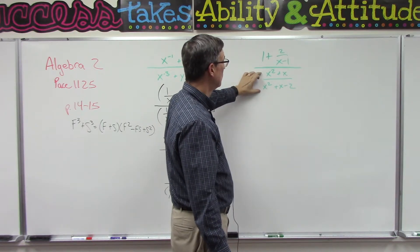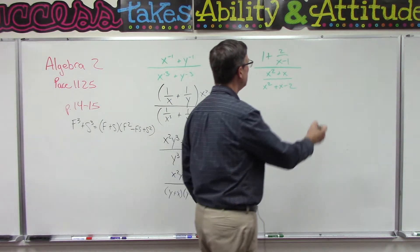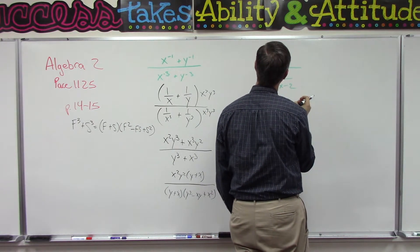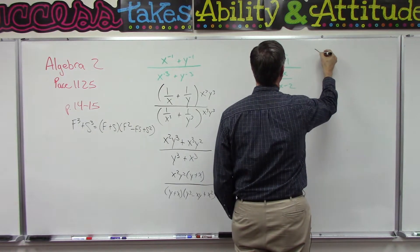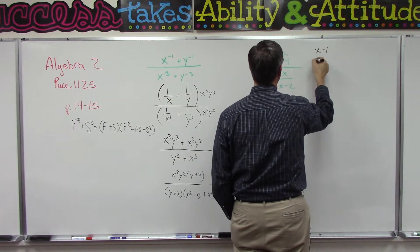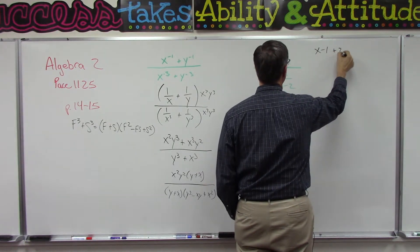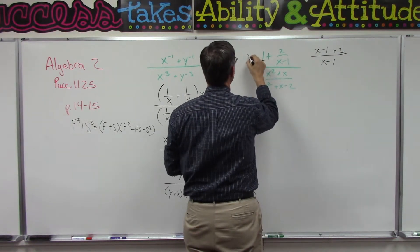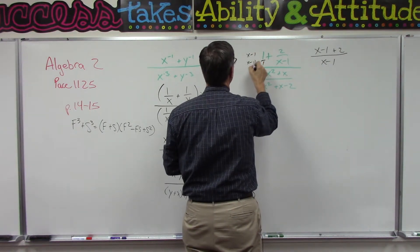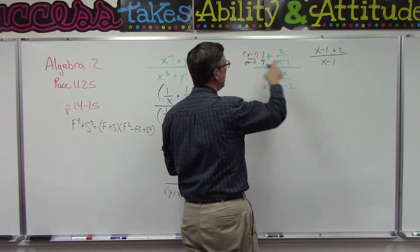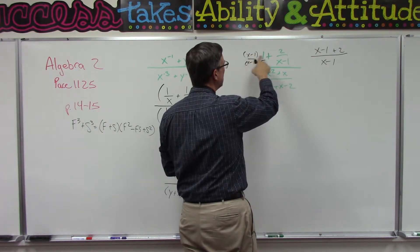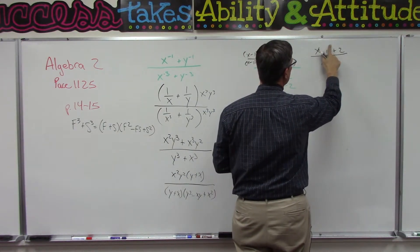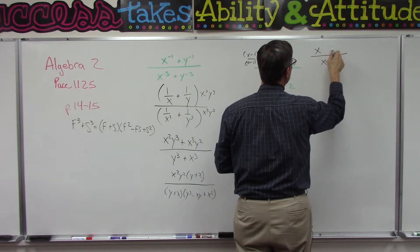First thing I want to do though is get a common denominator just in the numerator, so this would become X minus one over X minus one plus two, all over X minus one. So I just multiplied, this is like one over one. All right, so now I did the X plus X minus one plus two. Look at that, I can actually simplify negative one plus two and have plus one.